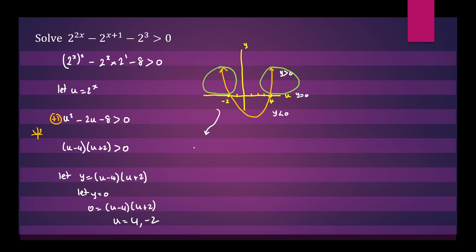So we can write u must be less than -2 or u must be greater than 4 to make this inequality true. Going back to our original substitution, we can say that 2^x is either less than -2 or 2^x is greater than 4.